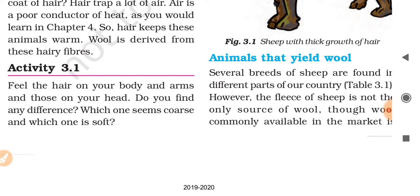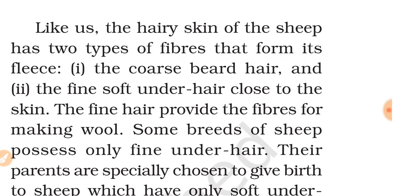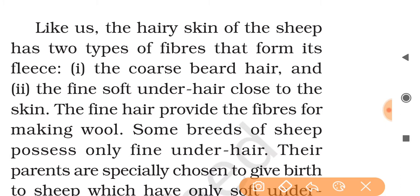Activity: Feel the hair on your arms and on your head. Do you find any difference? Which one seems coarse and which is soft? Like us, the hairy skin of the sheep has two types of fibers that form its fleece — the coarse beard hair, and the fine soft under-hair close to the skin. You can observe these two types of hair easily on any sheep or goat.